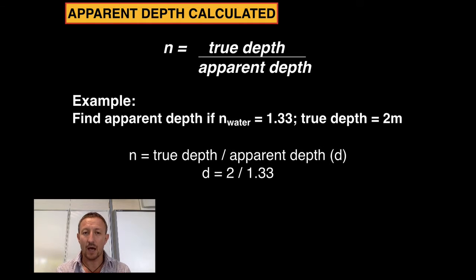I'm going to swap over apparent depth and refractive index. So I get true depth divided by the refractive index will give me the apparent depth of the image, which is two divided by 1.33. So my image is going to be 1.5 meters from the surface - basically it's half a meter higher than where the object actually is.